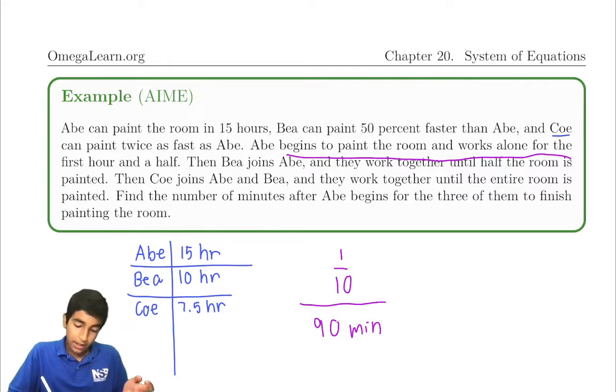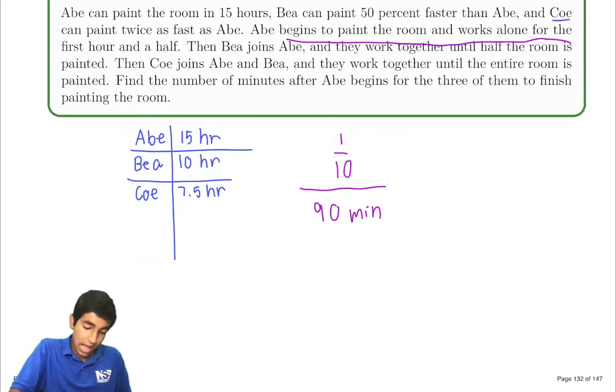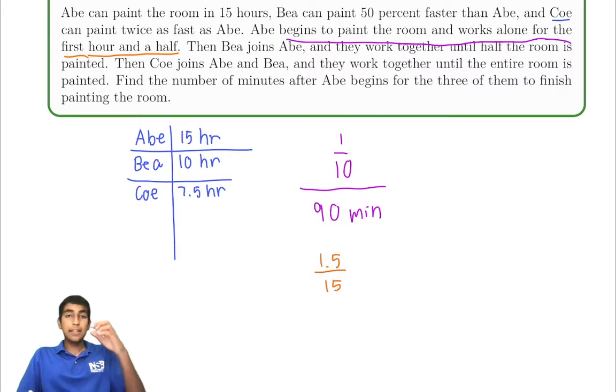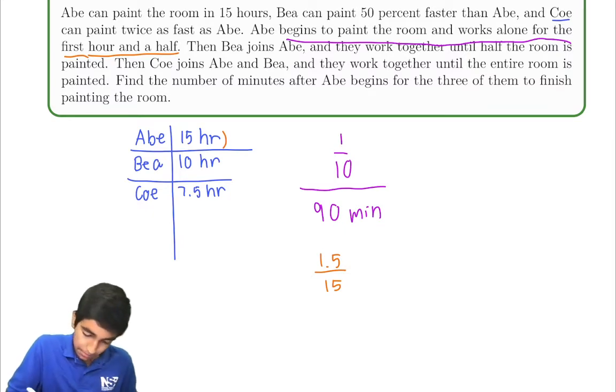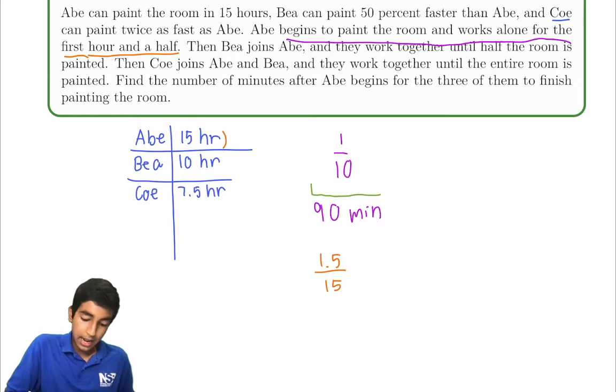Abe paints a tenth of it. Why a tenth? Well, because 90 minutes or 1.5 hours, as the question states, 1.5 hours divided by 15 hours equals one tenth. Because in 1.5 hours, Abe can take only one tenth of the time Abe takes to paint the whole room. So one tenth. 90 minutes.